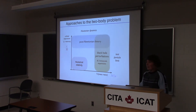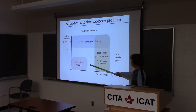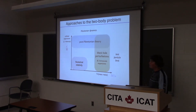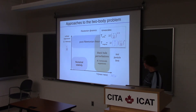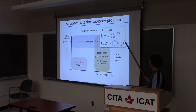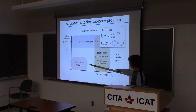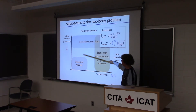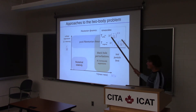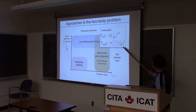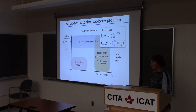You might ask: if we have numerical relativity, why do we still need these perturbative approaches? Why not just solve everything on the computer? That is simply computationally impossible. If you try to extend numerical relativity to larger orbital separation, orbits would take longer to complete, the inspiral would be much longer, and the computational cost becomes too prohibitive. Similarly, if you try to extend to very large mass ratios, your inspiral would take very long — up to a year or so in real time — and you'd also have to resolve both the small mass and the large mass.